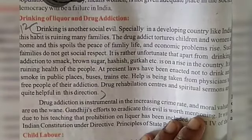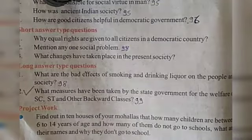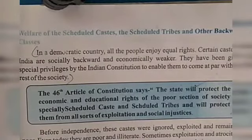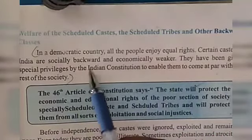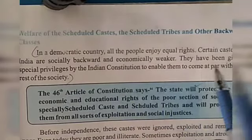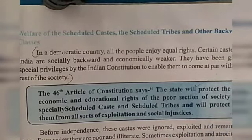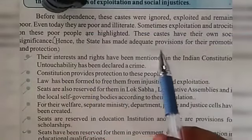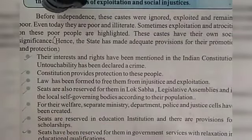Next question: what measures have been taken by the state government for the welfare of SC, ST, and other backward classes? This answer is in page number 99. In a democratic country, all people enjoy equal rights. Certain castes in India are socially backward and economically weaker. They have been given special privileges by the Indian Constitution to enable them to come at par with the rest of society. Hence the state has made elaborate provisions for their promotion and protection.